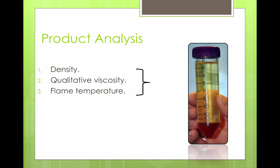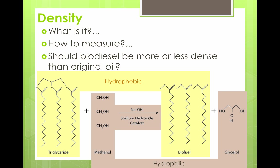We need to do product analysis to see if we have produced biodiesel similar enough to diesel to burn in our diesel engine. We're going to look at three measures of product quality: density, viscosity, and flame temperature — comparing vegetable oil, biodiesel, and diesel for each. Density is the mass of something in a certain volume — mass per volume.